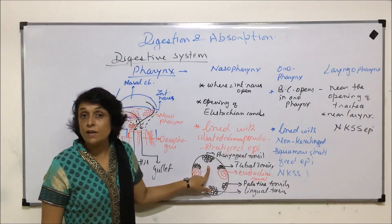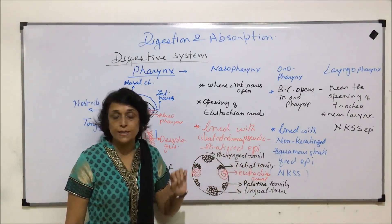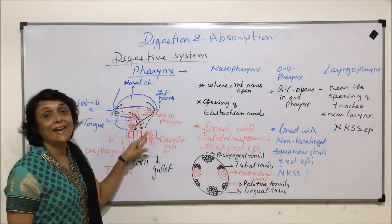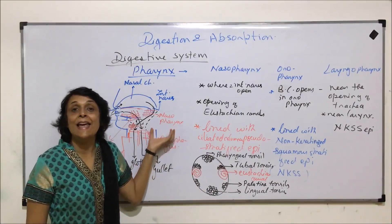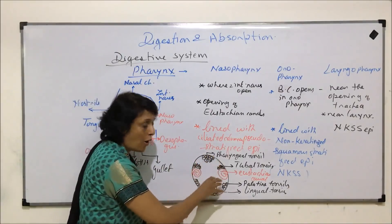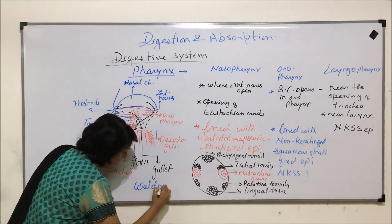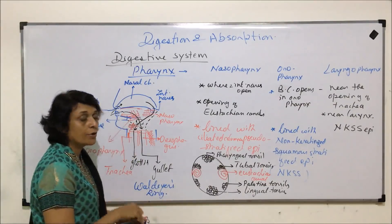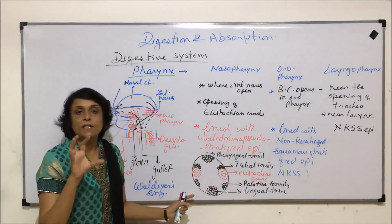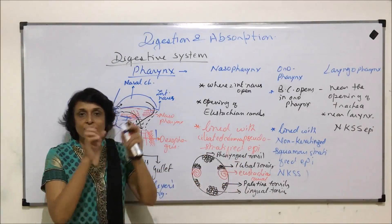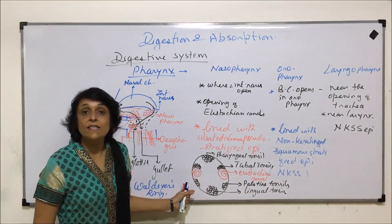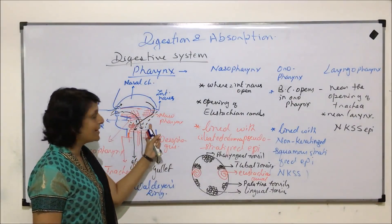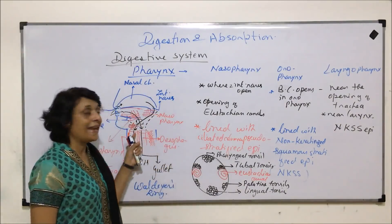These tonsils are lymphoid tissues, so their purpose is defense — they produce lymphocytes. The reason there are so many in this area is because both food and air enter here, so they help protect against pathogens. This complete arrangement of tonsils is known as Waldeyer's ring, or Waldeyer's lymphoid ring, because all these lymphoid tissues are arranged in a ring-like manner. They produce lymphocytes and help destroy pathogens that enter via food or air.